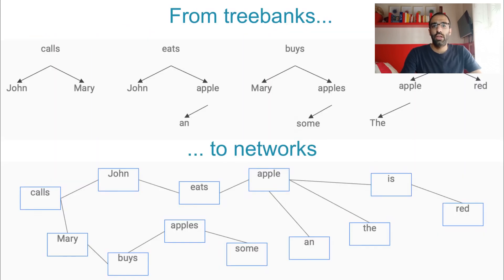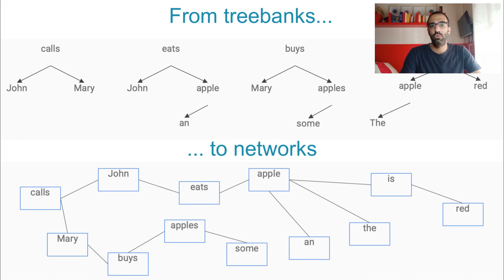To induce a network from a treebank, the first thing to do is to decide whether one wants a word-based network or a lemma-based network. In the first case, lemmas will be taken as nodes, while in the second case, words will be. In our case, we chose a word-based network.